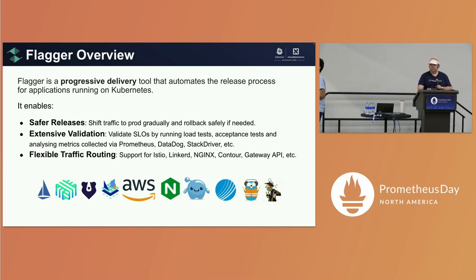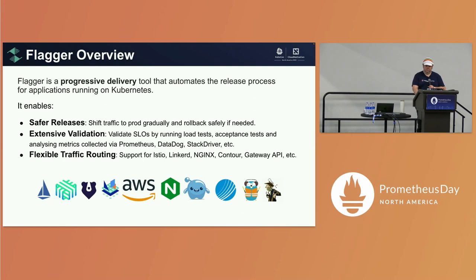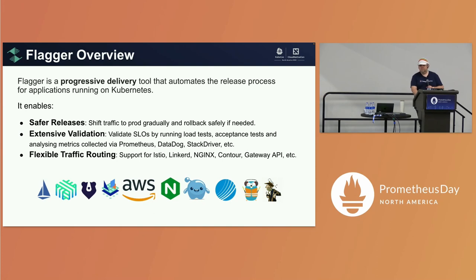Flagger supports pretty much every Ingress and service mesh out there. We also have support for Gateway API, which is supposed to be the new standard for networking and load balancing in Kubernetes. As more and more projects start adopting Gateway API, we are confident that we will be working with all of them.